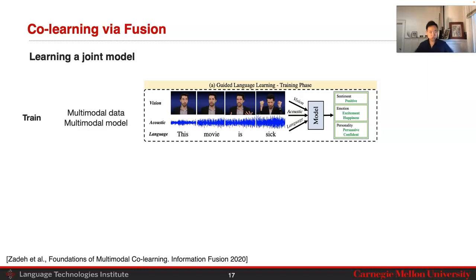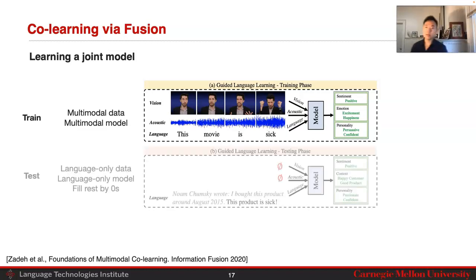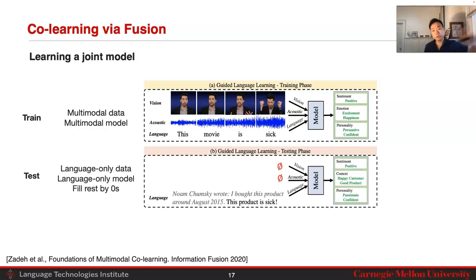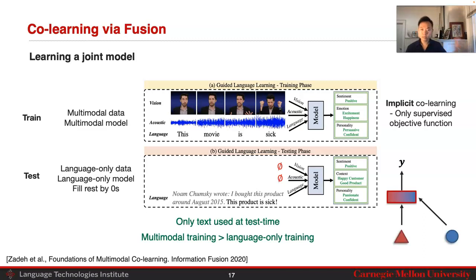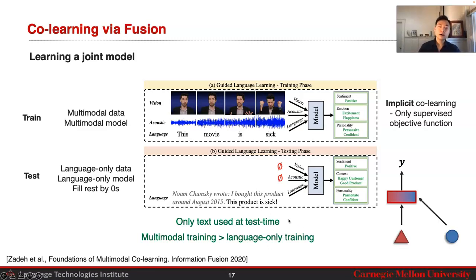Another example is learning a joint model: during training, use multimodal data — human gestures, audio, and language — to learn a common model, and at testing simply replace secondary modalities like video and audio with zeros, keeping only language. This can be seen as implicit co-learning since it only uses a supervised objective without external coordination functions. Video and audio provided during training allow learning an enriched representation space, so the model does better at classifying language. Multimodal training with text-only testing improves upon language-only training.